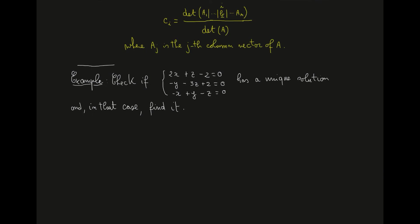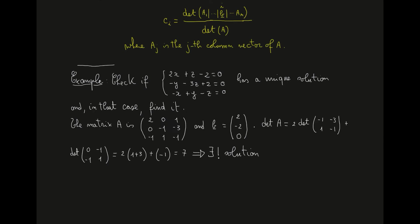Part A of the theorem states that a system of linear equations has a unique solution if and only if the determinant of A is non-zero. So let's compute the determinant of A by first writing A. The matrix A is the matrix of coefficients of this system. Looking at the equations, we identify the unknowns: the first equation has x and z; the second has y and z; and the third has x, y, and z.